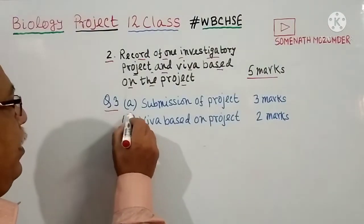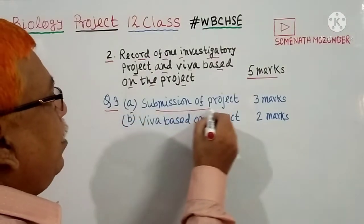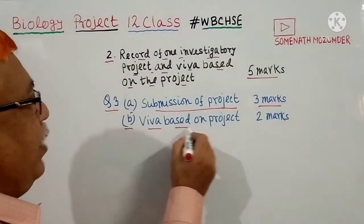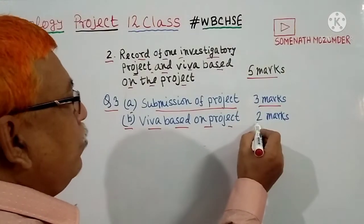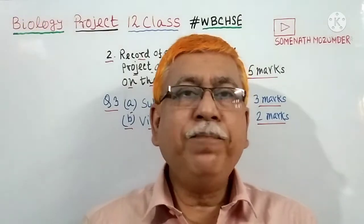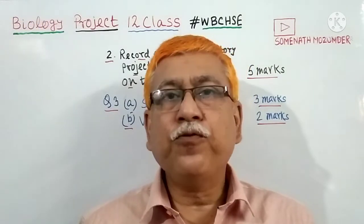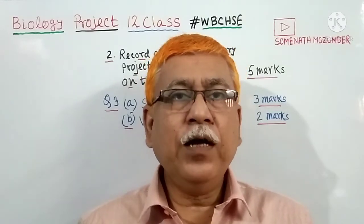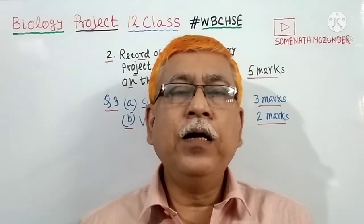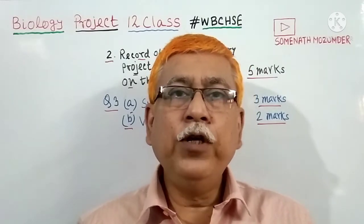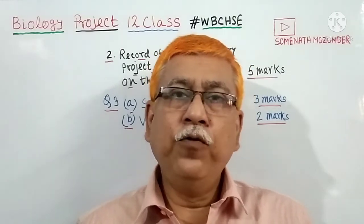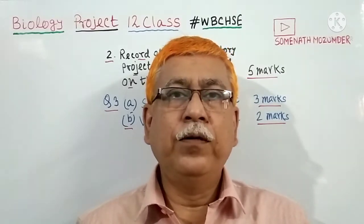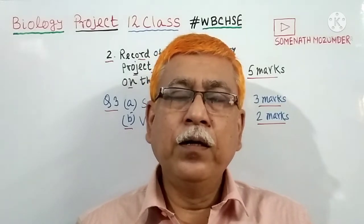In the question paper, question number 3A is submission of project with a maximum allocation of 3 marks, and 3B is viva based on the project with a maximum allocation of 2 marks. So you have to prepare your investigatory project and submit it. Here, we shall discuss how to prepare your investigatory project and how to submit it during the exam.